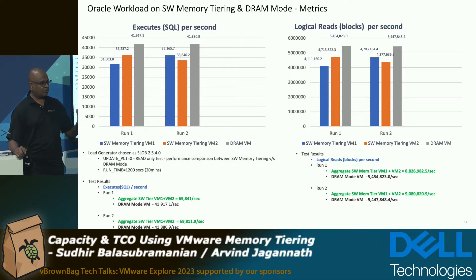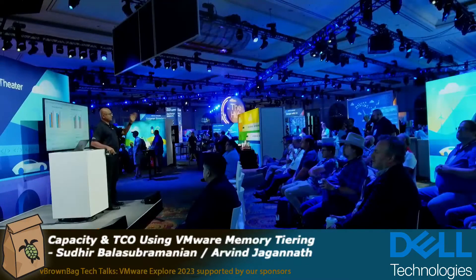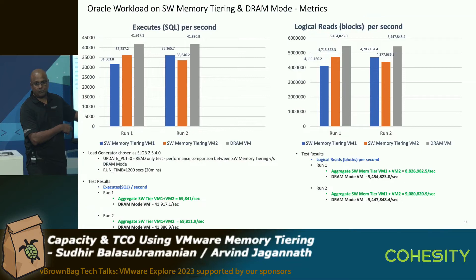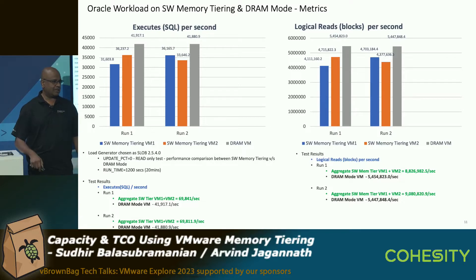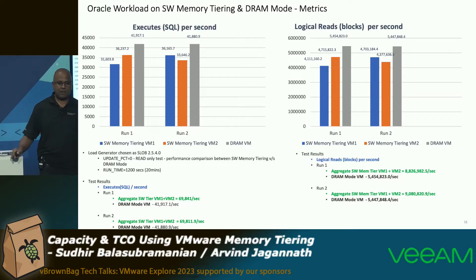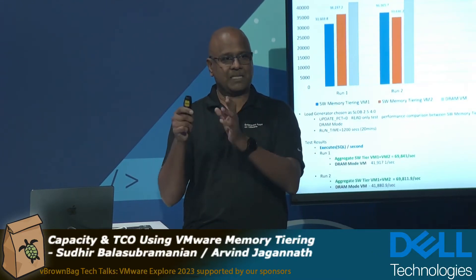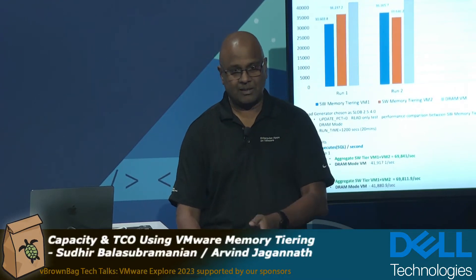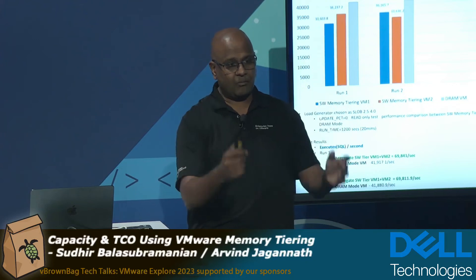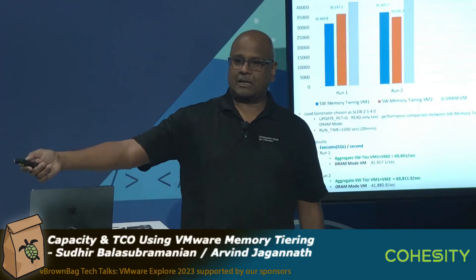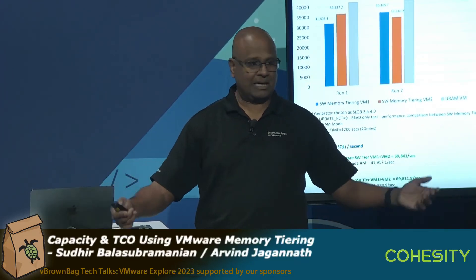The synthetic load generator we used is called SLOB — the Silly Little Oracle Benchmark — which stresses I/O, whether memory or disk. In the read-only test, the aggregate software tiering metrics for VM1 plus VM2 came out much higher than the DRAM-only case. Yes, you're piling up VMs, so you will get more SQL per second — but that's exactly the point. I don't want to spend money on expensive DRAM. I want cheaper Tier 2 memory, more aggregate memory, more VMs — dev/test or non-prod use cases — without going back to my manager asking for more servers or more RAM.